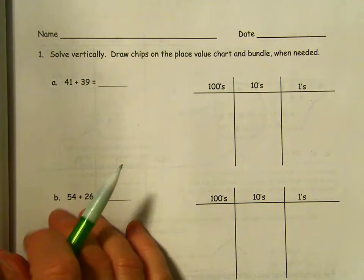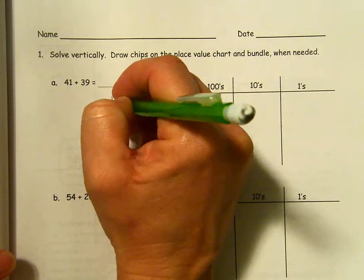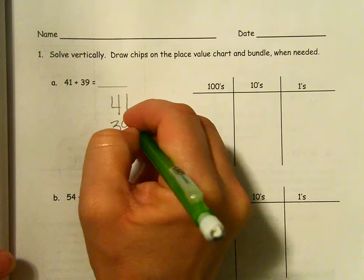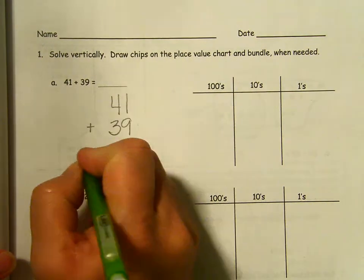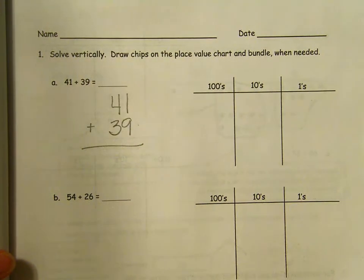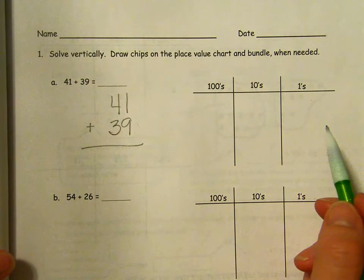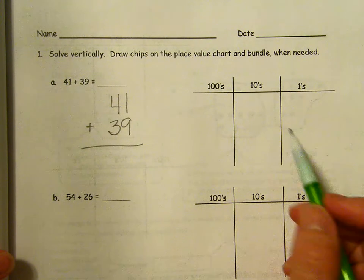First thing we have to do, of course, is write a problem vertically. Remember being careful to line up those ones and tens. Add my plus sign so I don't forget what I'm doing. And I'm going to show those two numbers in the place value chart.